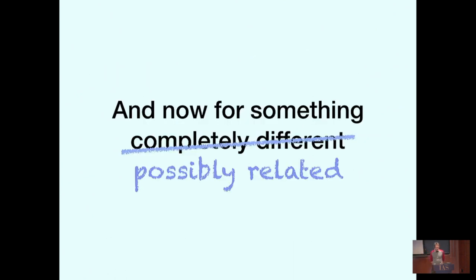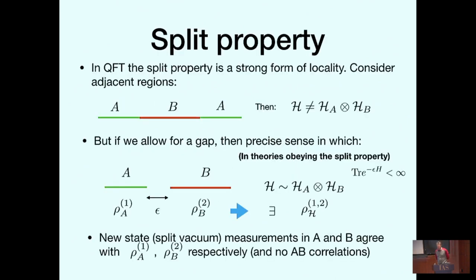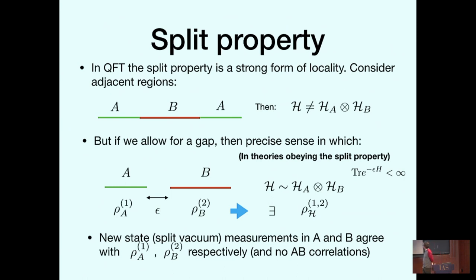Now I'm going to give you something completely different but possibly related. The idea is that there's some relation between this and the split property. Let me give a brief introduction to the split property. In quantum field theory, the split property is some strong form of locality. Imagine two regions A and B that are adjacent — right next to each other. It's well known that the Hilbert space of the quantum field theory cannot be written as a tensor product of A with B, and you can understand this as a UV issue at this surface.